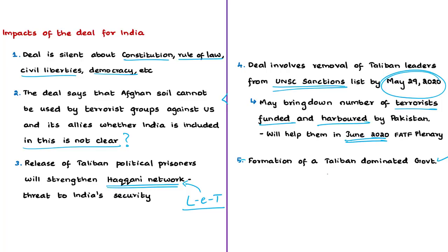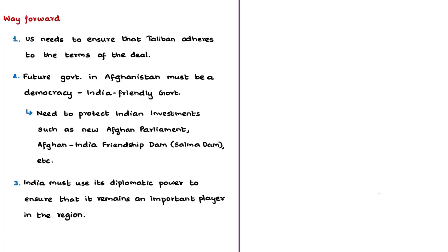Another concern for India is the possible formation of a Taliban-led government in Afghanistan, which will not be favourable to India since India supports the Ashraf Ghani government. The chances of such a new government being a democracy are also very low. The deal has paved the way for a Taliban-dominated government that may not be India-friendly. While the reduction of violence is a positive for the Afghan people, the US must ensure the Taliban strictly adheres to the deal's terms.